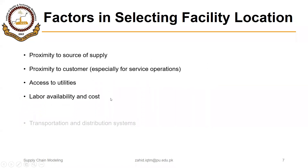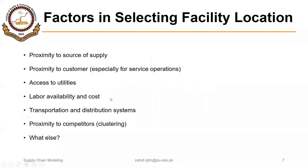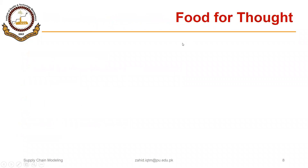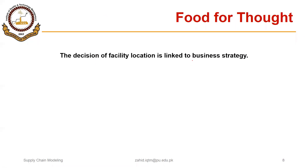We saw in the last lecture the points that are important to select the location of a facility: proximity to source of supply, proximity to customers, access to utilities, labor availability and cost, transportation and distribution system, proximity to competitors, and so on. Factor rating method and AHP were used to rank these factors and rank each facility with respect to these factors, then rank each facility as a whole using a cumulative score. A fundamental point to keep in mind is that the decision of facility location is linked to the business strategy of any organization.